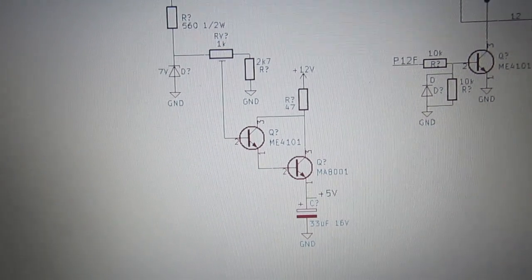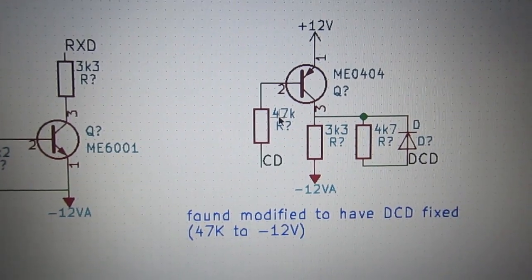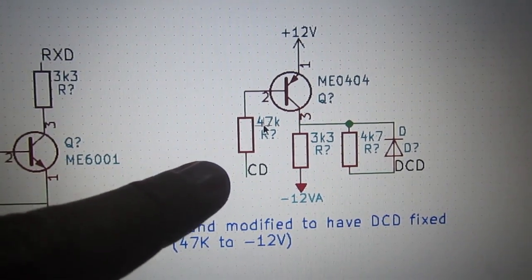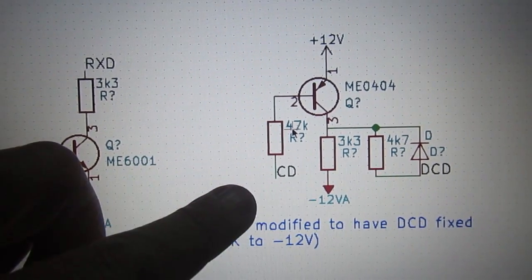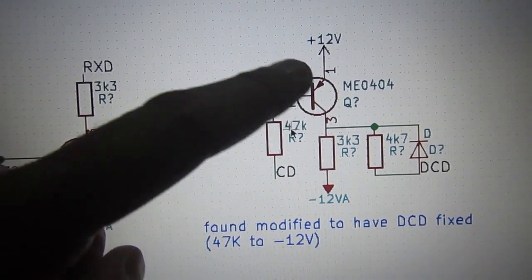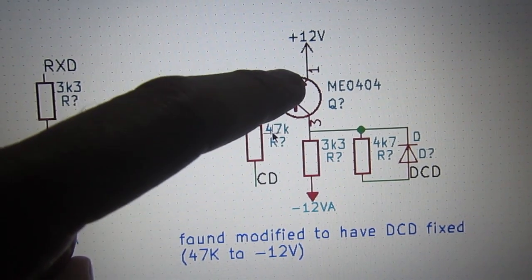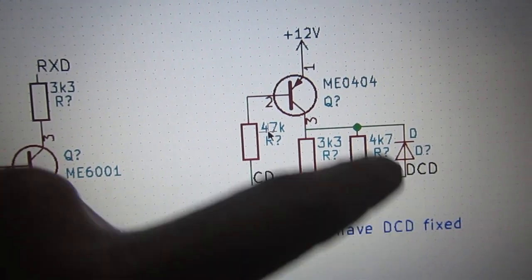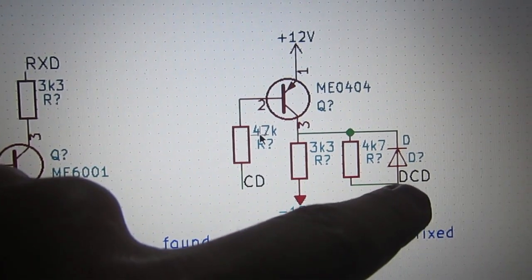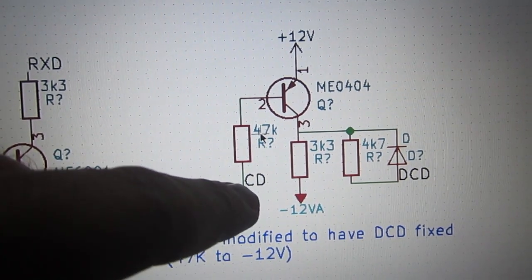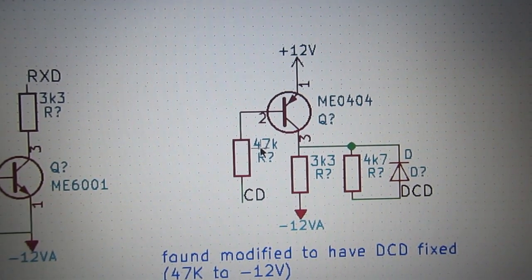Another thing that is important is the data carrier detect on the serial port is disabled. It's stuck in the asserted level because this point has been connected to minus 12, so this transistor is always closed. The current flows here and plus 5 goes through this resistor to the DCD line, and plus 5 to the DCD is DCD present asserted regardless of the carrier detect logic level.